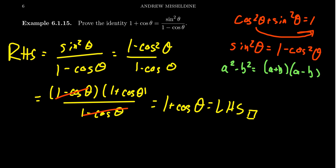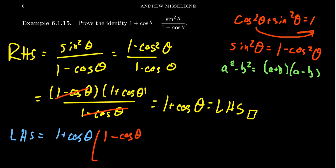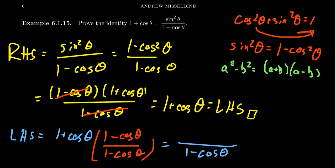This difference of squares factorization is very useful when proving trigonometric identities, combined with Pythagorean identities. Now I want to provide an alternative proof. What if we had started with the left-hand side? You have one plus cosine theta. How are you going to get the one minus cosine in the denominator? You insert it by multiplying the top and bottom by one minus cosine theta. You need a denominator, so we can introduce it that way, and then leave the denominator alone because that's the denominator you wanted.